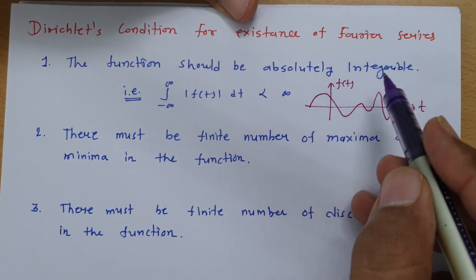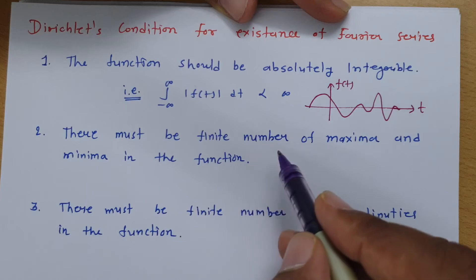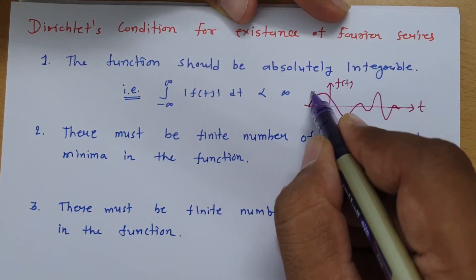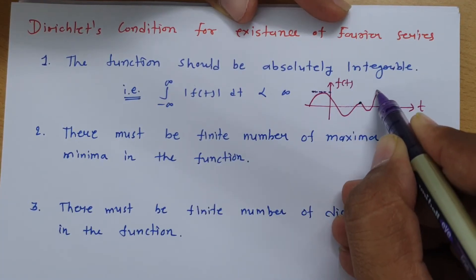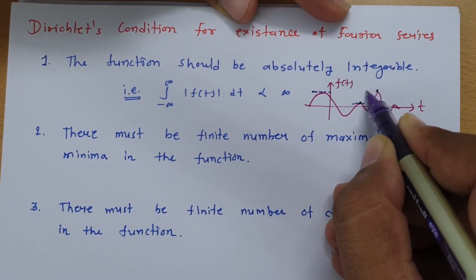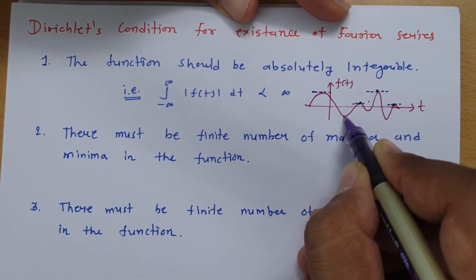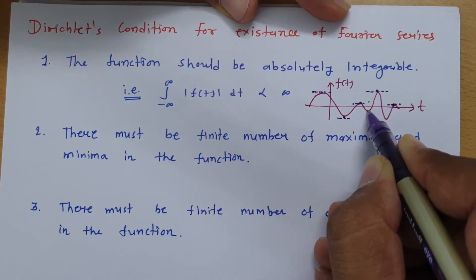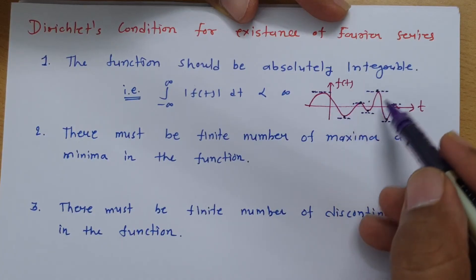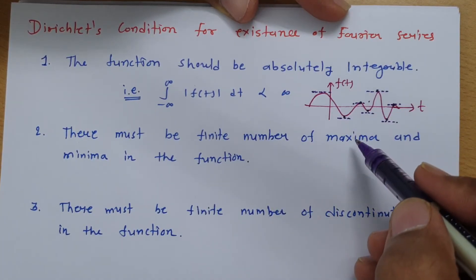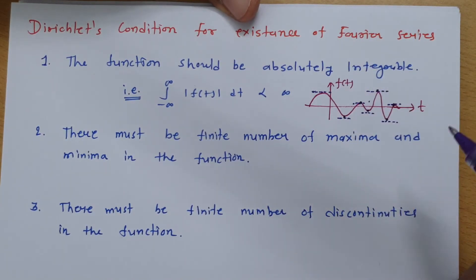If the area is finite, one can say it is absolutely integrable. Now the second condition: it should have a finite number of maxima and minima. Here there is one maxima, here a second maxima, here a third maxima, here a fourth maxima. Similarly, here there is a minima, here another minima, and here another minima. So it should have a finite number of maxima and minima — only then can we calculate the Fourier series of a signal.